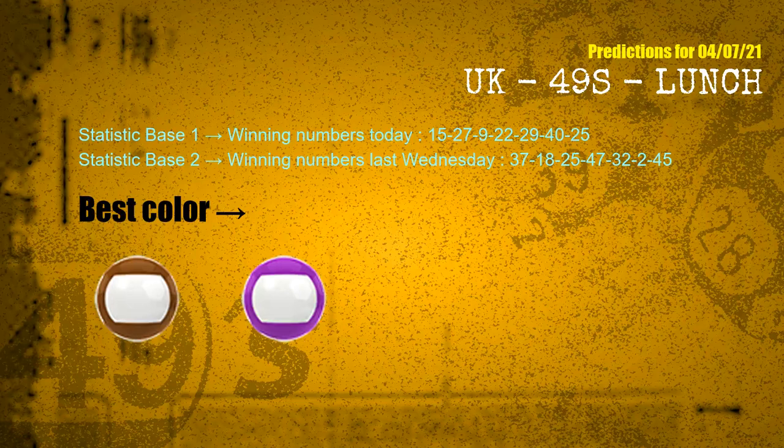According to the statistics above, with winning numbers today 15, 27, 09, 22, 29, 40, 25 and winning numbers last Wednesday 37, 18, 25, 47, 32, 02, 45 — the frequent following colors are brown and purple.